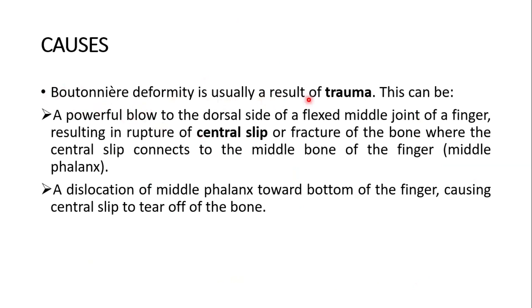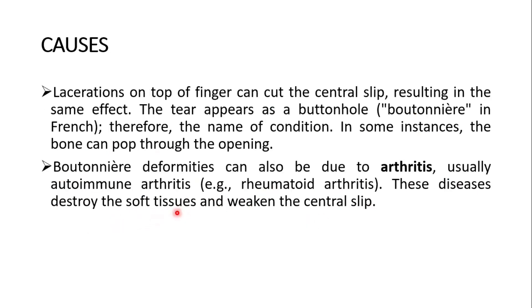Boutonnière deformity is usually a result of trauma. This can be a powerful blow to the dorsal side of a flexed middle joint of a finger, resulting in rupture of the central slip or fracture of the bone where the central slip connects to the middle phalanx. A dislocation of the middle phalanx towards the bottom of the finger can cause the central slip to tear off the bone. Lacerations on the top of the finger can also cut the central slip resulting in the same effect. The tear appears as a buttonhole — the 'boutonnière' in French, hence the name.